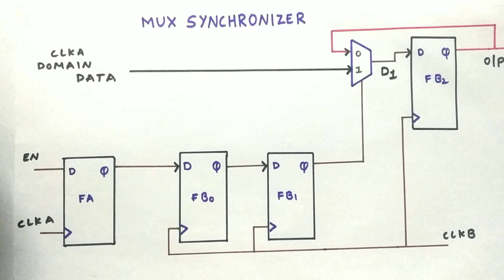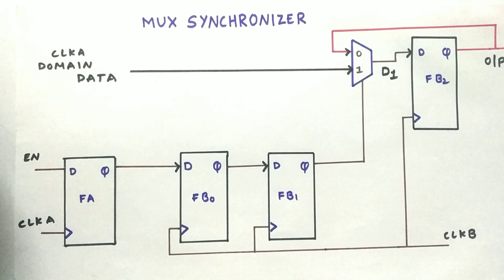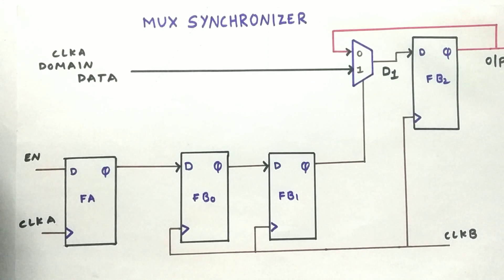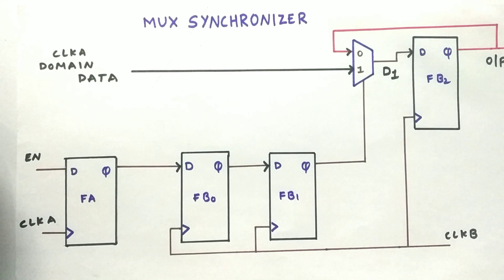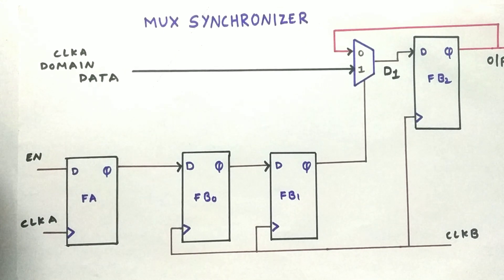If we want to synchronize an N bit of data, then we require N bit two-flop synchronizer. That's a huge amount of components required. To reduce the cost and efficiency, we are going with a MUX synchronizer.